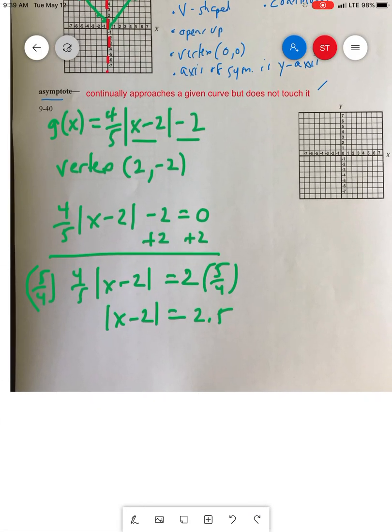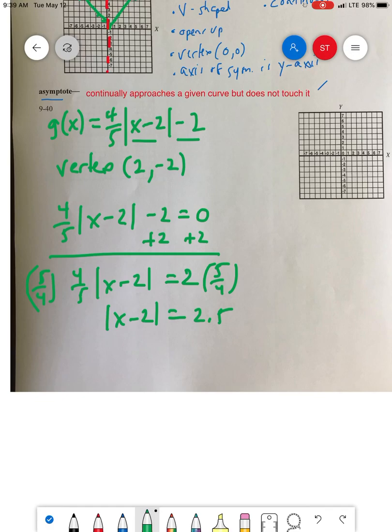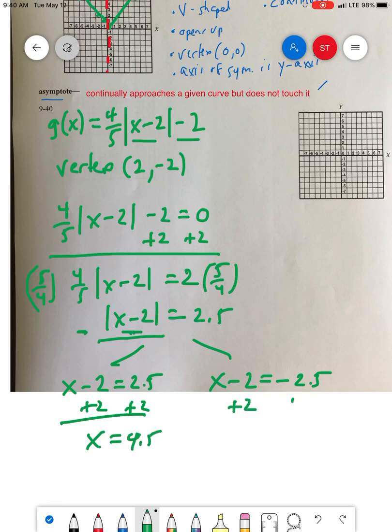Once you have the absolute value all by itself, you separate this into two problems: x minus 2 equals 2.5, and x minus 2 equals negative 2.5. Add 2 to both sides in each case. X equals 4.5, and x equals negative 0.5. So my x-intercepts are (4.5, 0) and (-0.5, 0).